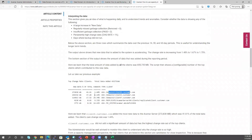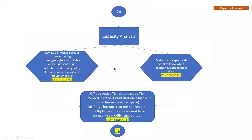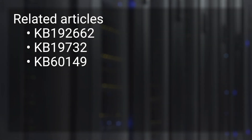This concludes our session about capacity analysis. Please find the reference article details in the description below. Also, if you would like to know how to perform tiering to offload Avamar backups from the active tier to cloud, kindly check the related video links in the description.